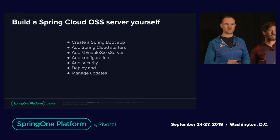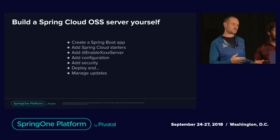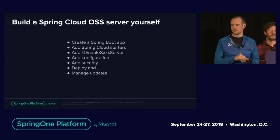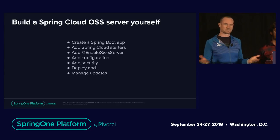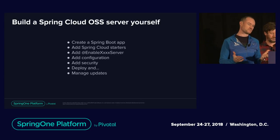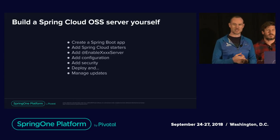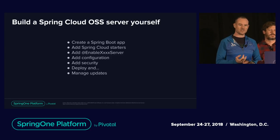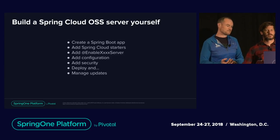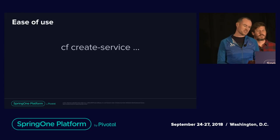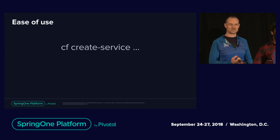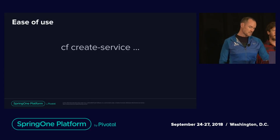What's the difference between what Spring Cloud open source offers versus what Spring Cloud Services offers as a tile on the Pivotal Cloud Foundry platform? With open source, you can certainly do the things we're going to show you today, but it's more involved — you create a Spring Boot app, add a starter, add the annotations and configuration you need, build your security model, deploy it somewhere, and then manage all of the updates yourself. With SCS, the first tenant is ease of use: all it requires is a CF create-service command. We've got those three different services — you can create a circuit breaker or a config server as easily as that.